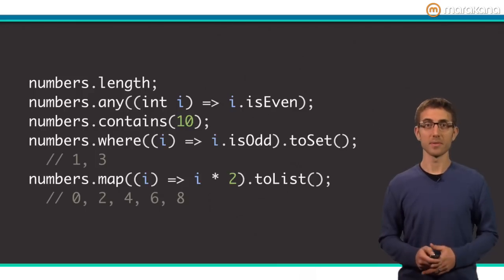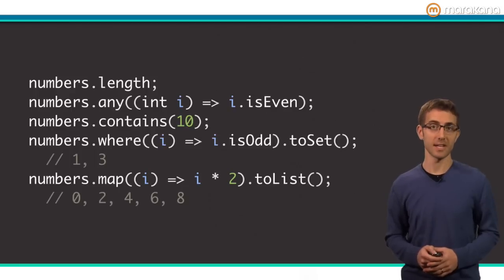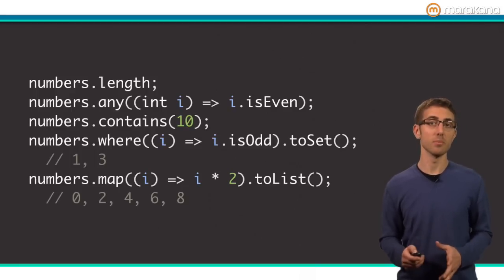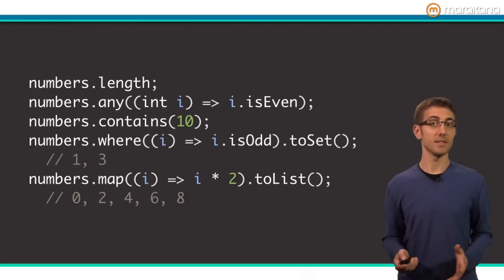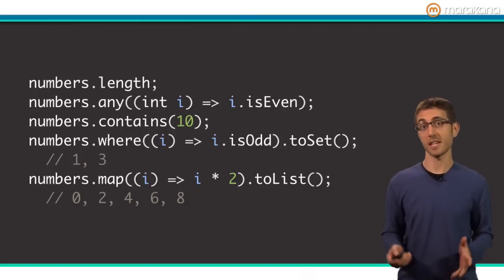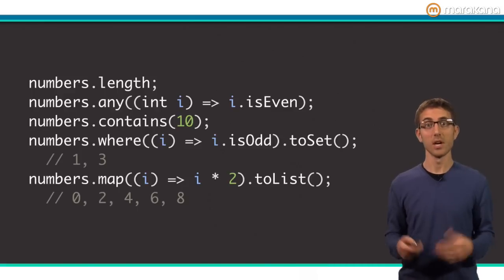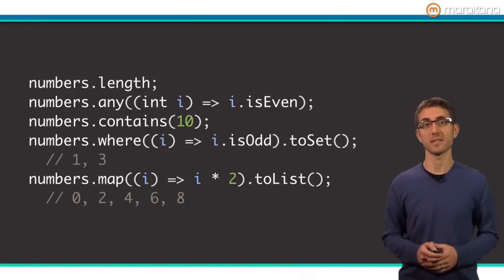The last two examples, where and map, illustrate iterable's lazy application of chaining. For example, in the last example, map returns a new iterable without actually running the mapping operation. This means the actual doubling operation doesn't take effect until toList is called, which actually performs the iteration and stuffs the results in the list.